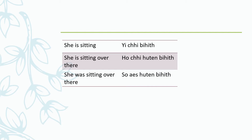Now, if she is sitting over there — you can still see that person but they are not near you — you use the word ho. 'She's sitting over there': ho ch hu ten behit.